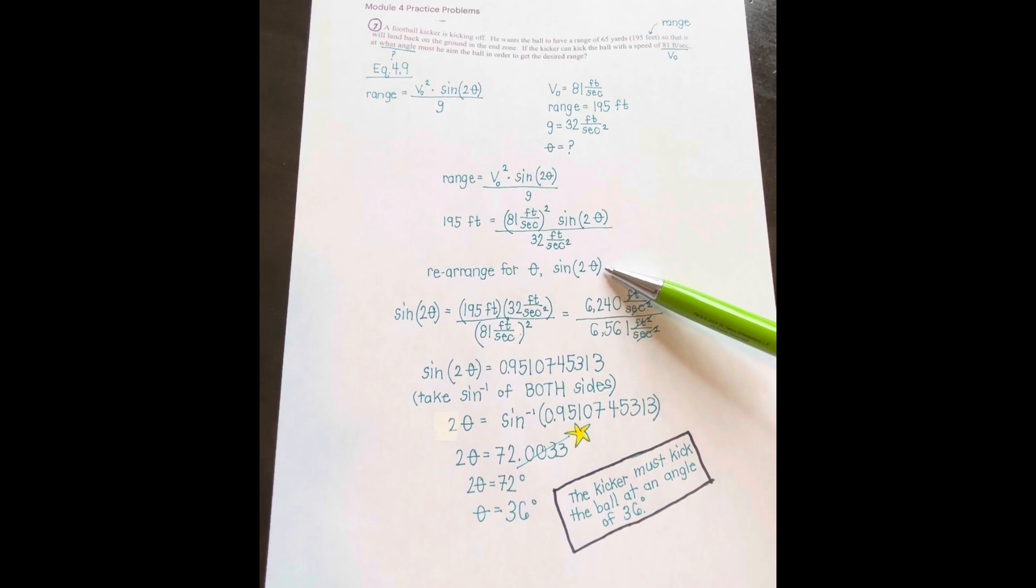We have to rearrange the equation to solve for theta, or 2 theta, sine of 2 theta. And when we do that, we get to this point, and the sine of 2 theta is this long number. I only did these steps and I wrote this number exactly as it was displayed from the calculator, just to make sure everybody was okay using their calculators up until this point.